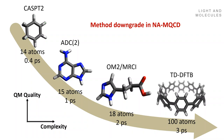Looking at the electronic structure required for each simulation: for the smallest, CASPT2 was used; then ADC2 for the next; then a semi-empirical method; then DFT for the last one. You downgrade the level. To increase the complexity of the molecular system, you had to downgrade the quality of the electronic structure. What's the implication for the dynamics results?